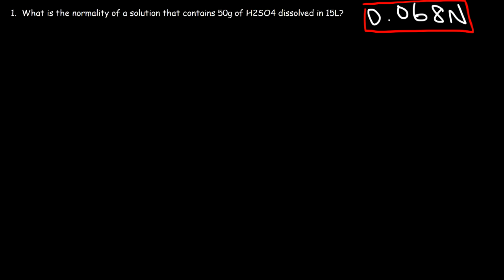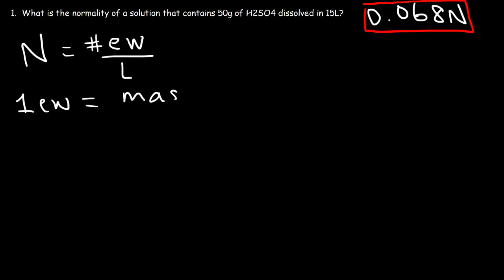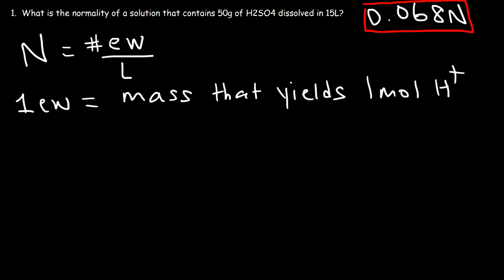Now let's talk about the second method. Normality is defined as the number of equivalents per liter of solution. For acids and bases, normality equals the number of equivalent weights divided by the liters of solution. One equivalent weight is defined as the mass that yields one mole of protons for acids — or one mole of hydroxide ions for bases. So one equivalent weight is the mass that yields one mole of H⁺ ions.